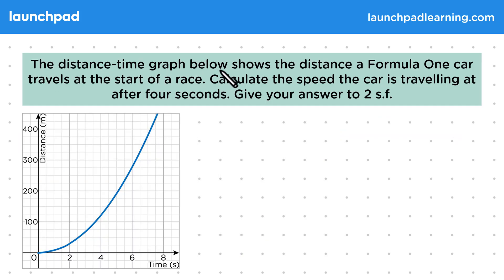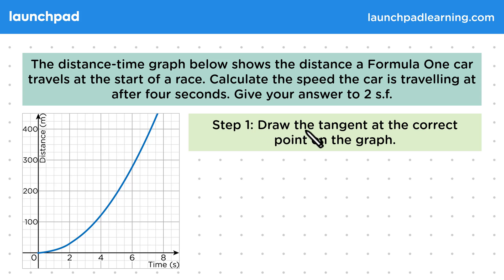The distance-time graph below shows the distance a Formula 1 car travels at the start of a race. Calculate the speed the car is travelling at after 4 seconds. Give your answer to 2 significant figures. So for step 1, draw the tangent at the correct point on the graph. We're looking for the speed after 4 seconds, so we need to draw the tangent at this point here.